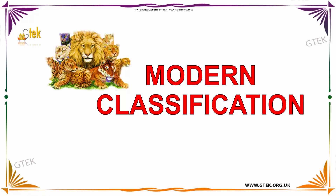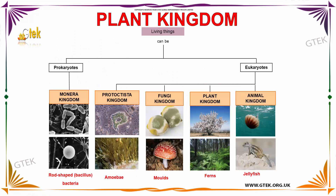Hi, welcome to G-Tech. Let us discuss about modern classification. In modern classification, the plant kingdom is divided into two types. The one is prokaryotes, another one is eukaryotes.